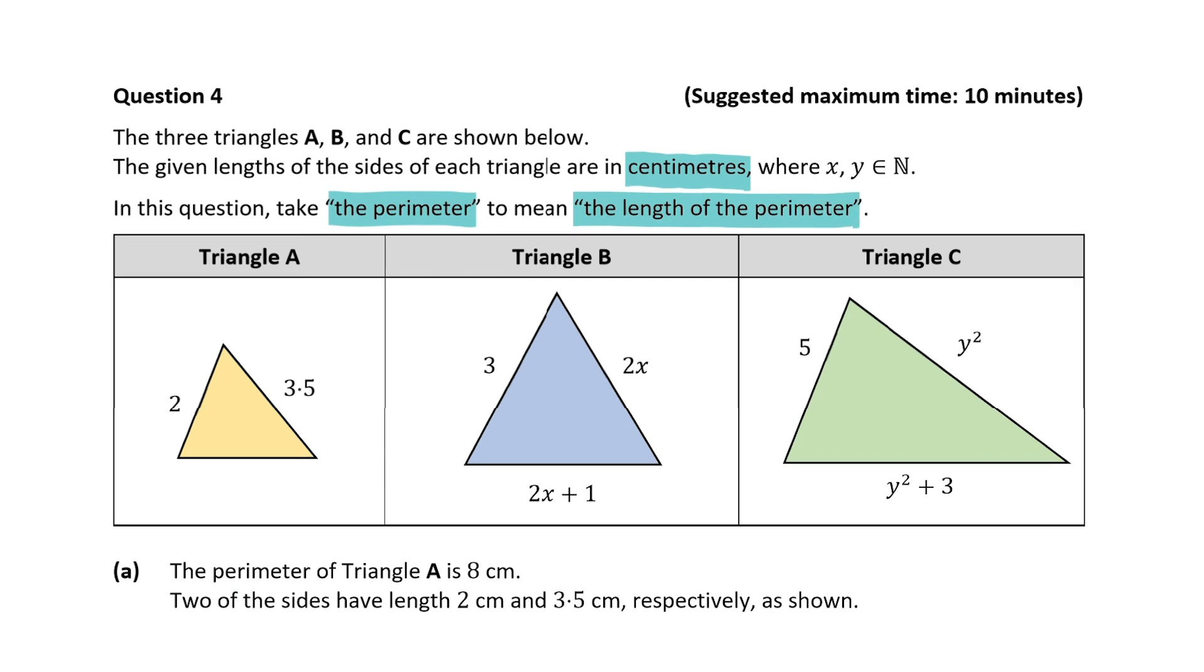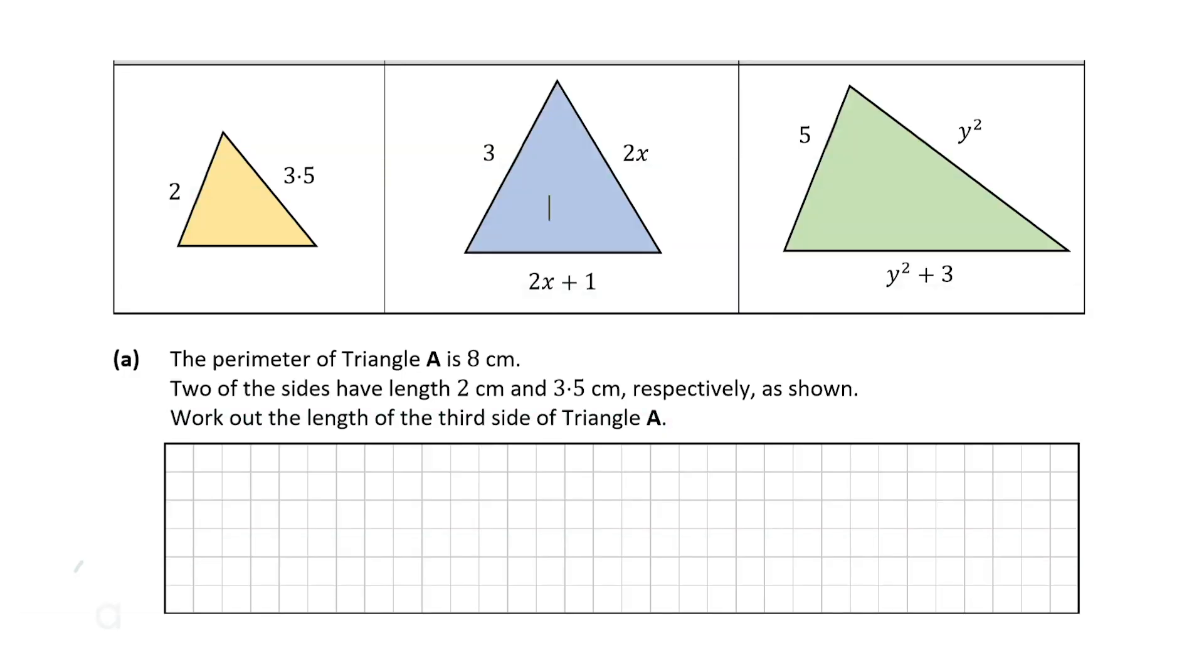So we're also told that in the question we must take the perimeter to mean the length of the perimeter. So let's look at question A. Question A tells us that the perimeter of triangle A is 8 centimeters. Two of the sides have length 2 centimeters and 3.5 centimeters and we can see that in the diagram. We're asked to find out the third length of triangle A.